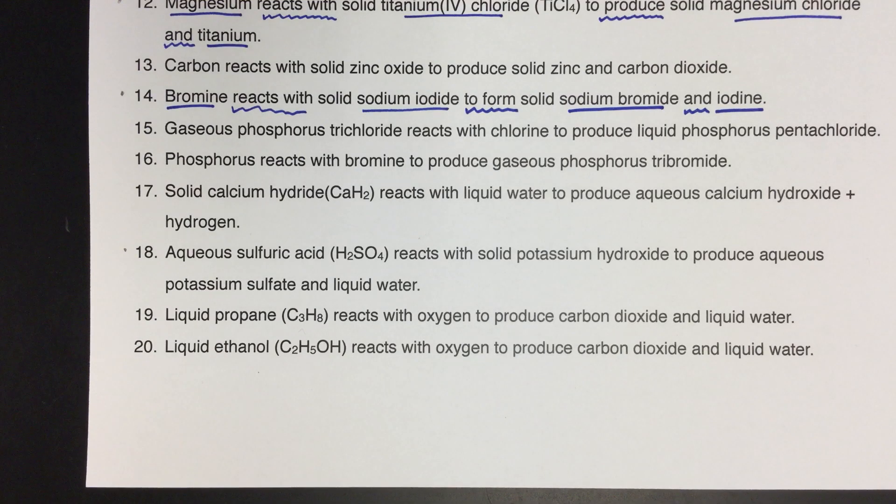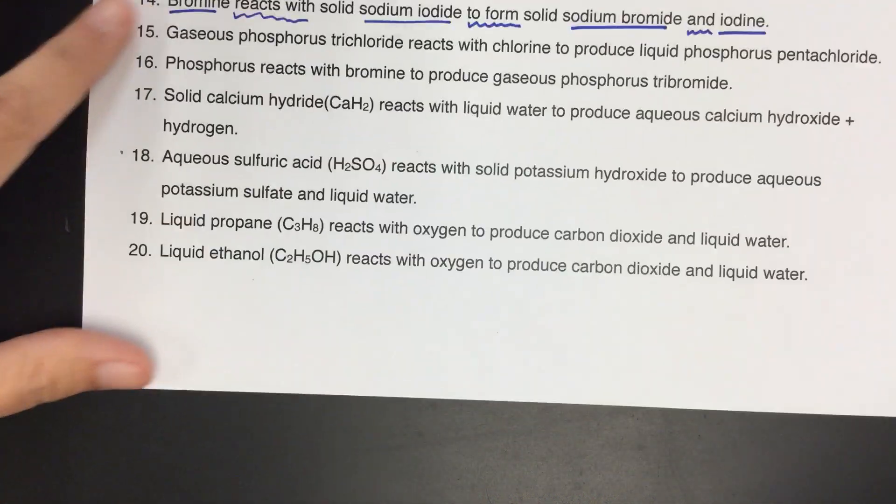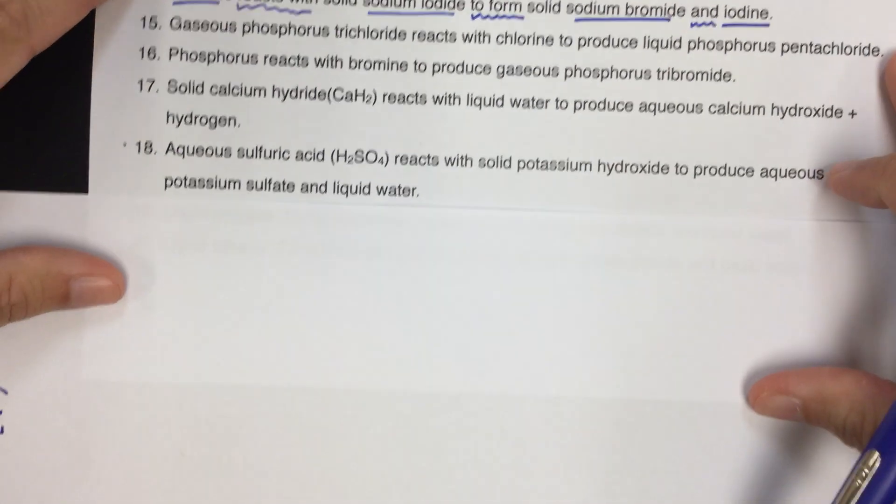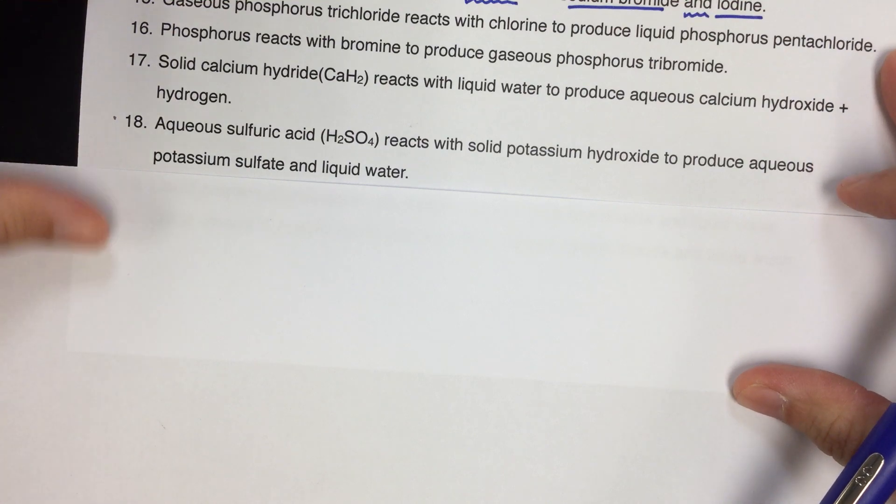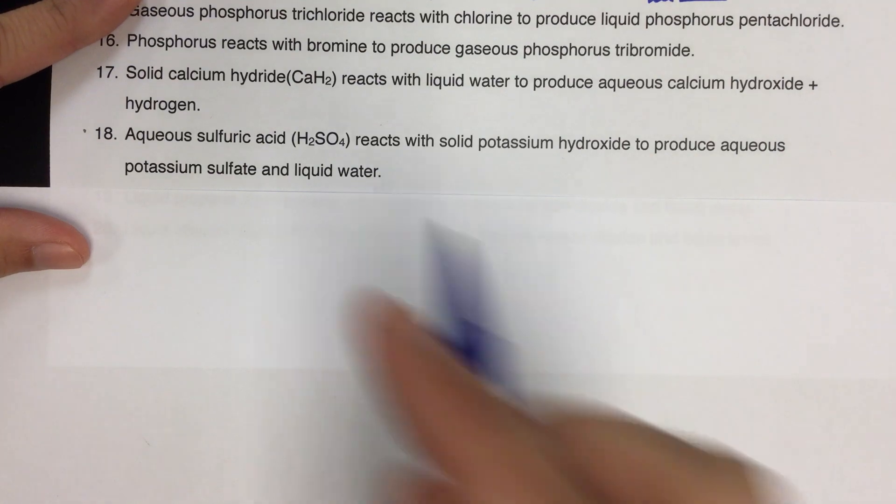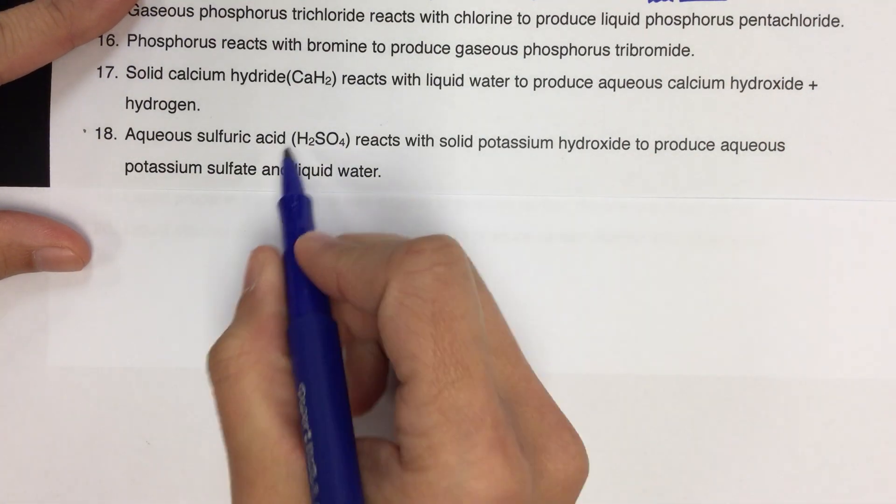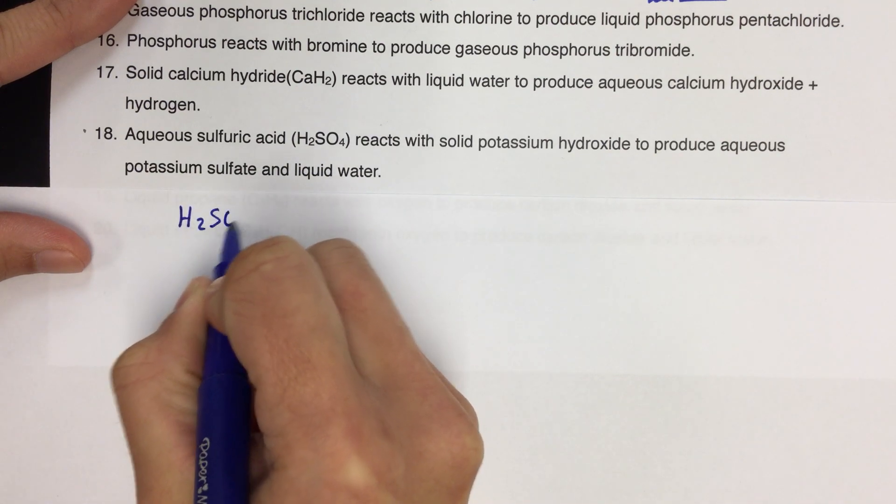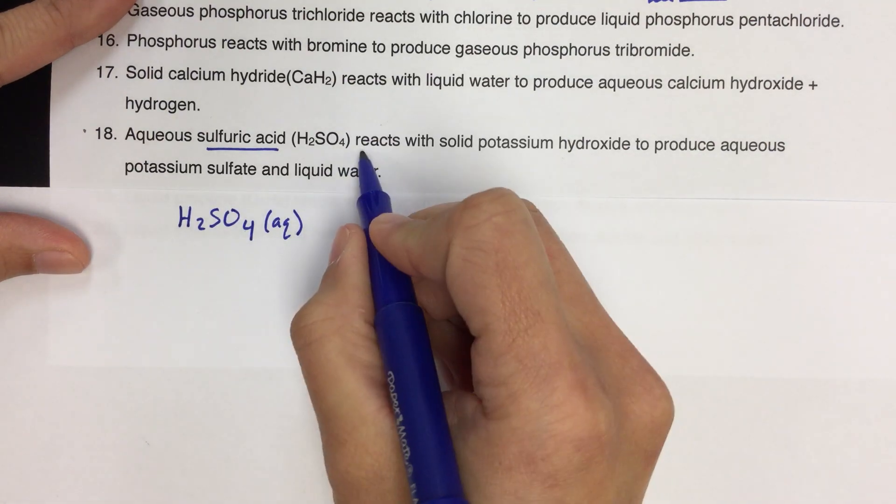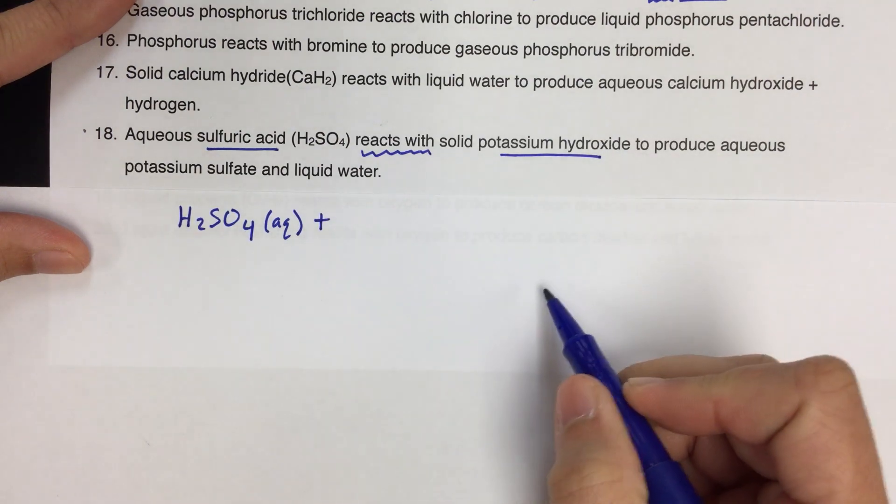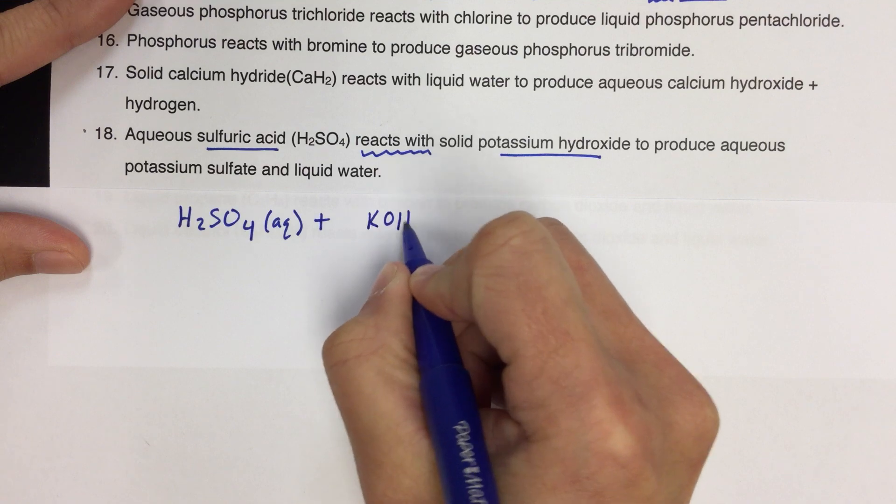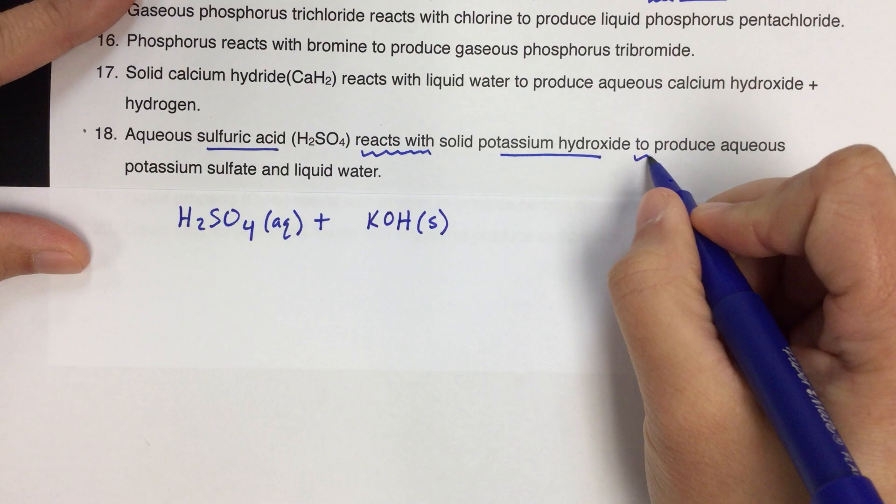Okay, so that's number 14. Let's do number 18. It tells us aqueous sulfuric acid reacts with solid potassium hydroxide to produce aqueous potassium sulfate and liquid water. So aqueous sulfuric acid, they were extremely nice here, gave us the formula for that. And the phase is aqueous, so that's AQ. Reacts with potassium hydroxide. So that's K plus, OH minus. So it's going to be KOH. Tells us it's solid.